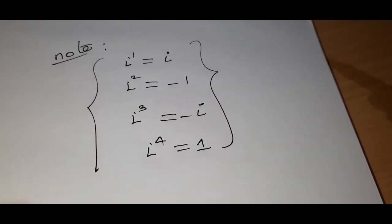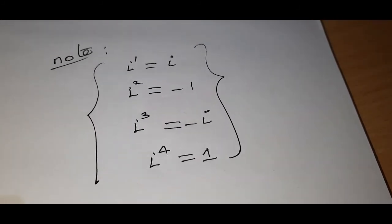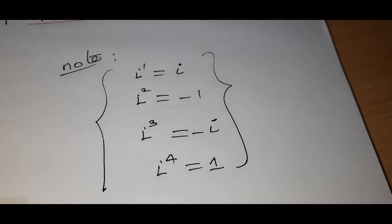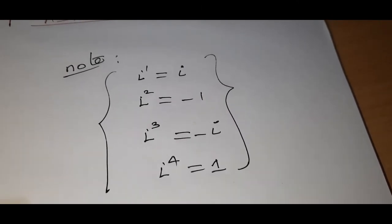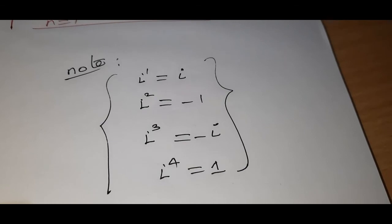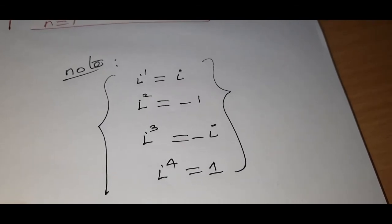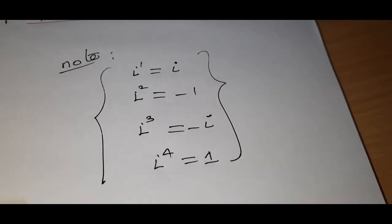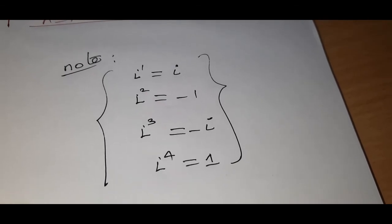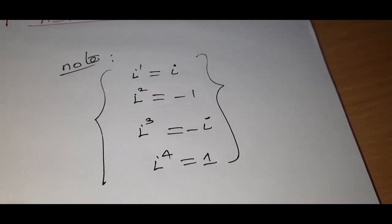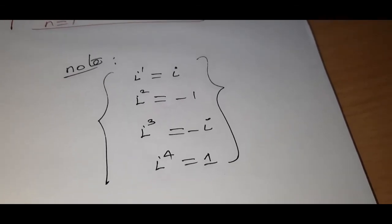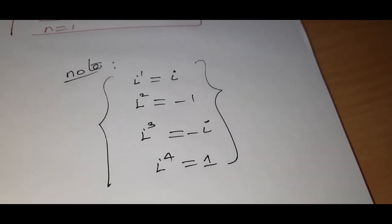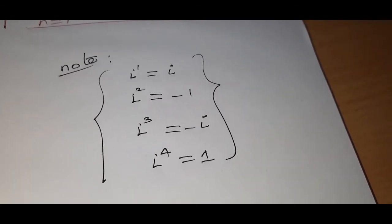To recap: i power 1 equals i, i squared equals minus 1, i power 3 equals minus i, i power 4 equals 1. High performance power of 4 is one. If you like this video, please like, share, and subscribe. Thank you.